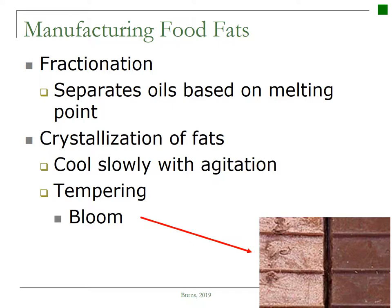Two more processes happen in the manufacturing of food fats. We have fractionation, which is the process of separating oils into fractions using controlled temperatures to crystallize the fatty acids based on melting point. Those lipid fractions with a high melting point tend to be more saturated in the trans configuration. So we can separate out those fractions, not use those, and use the unsaturated cis fat oils to make our vegetable oils that we are most familiar with.